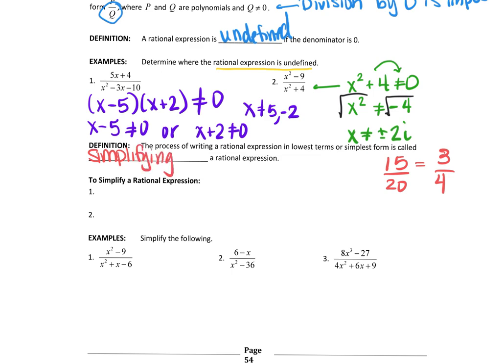So the process of writing a rational expression in lowest terms or simplest terms is called simplifying a rational expression. So we're going to simplify a rational expression. The first thing you do to simplify a rational expression is you're going to factor the top and bottom of the fraction.